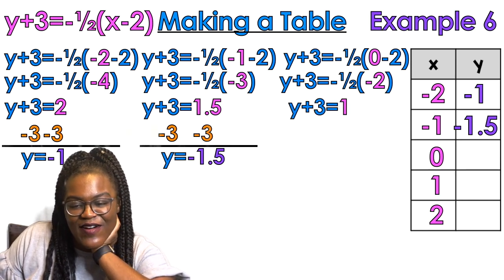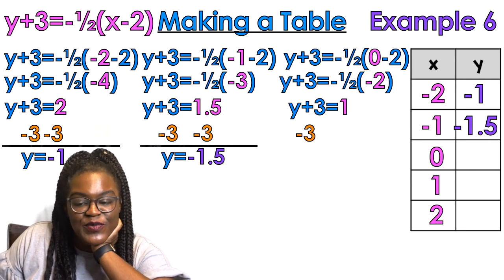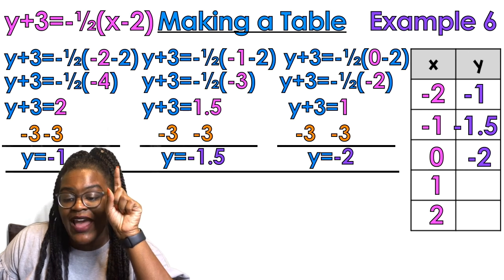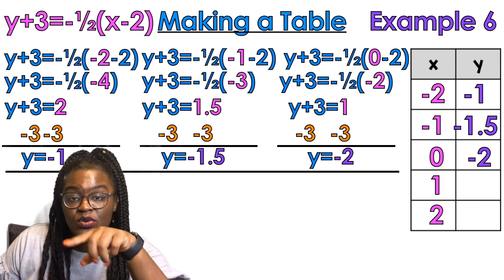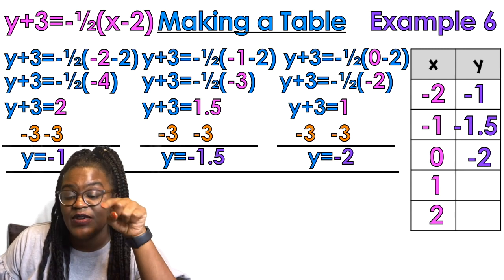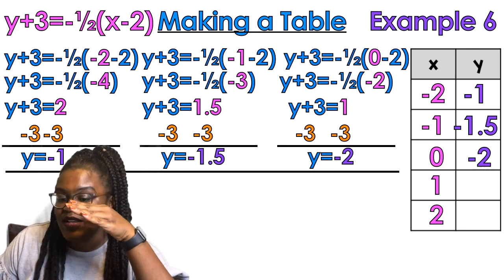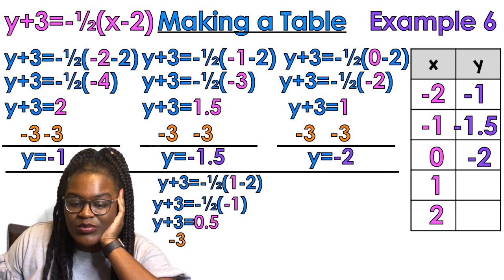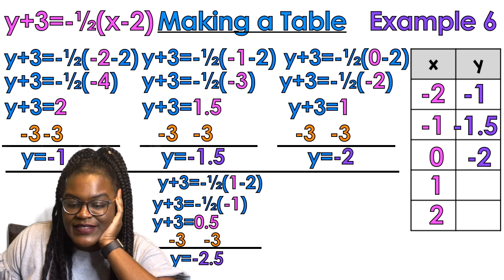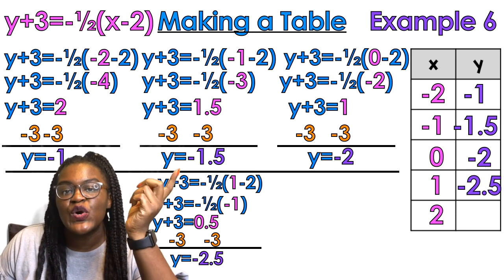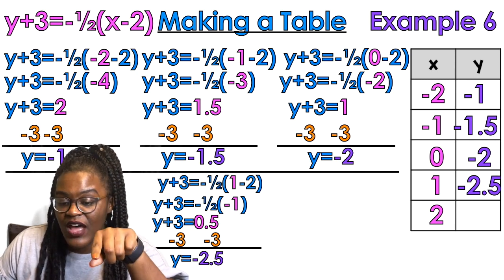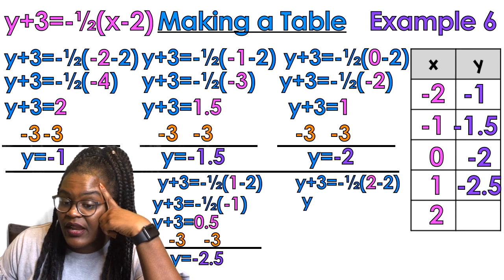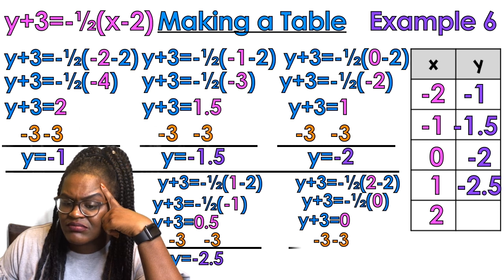Plugging in 0: 0 minus 2 is negative 2 — half of 2 is 1 — and look at my pattern: I'm going from negative 1 to negative 1.5 to negative 2. If it's following the same pattern, the next number has to be negative 2.5 — and yes, it's negative 2.5! Then the last number following the pattern has to be negative 3 — negative 1 to negative 1.5 to negative 2 to negative 2.5, so the last one is negative 3. That's the shortcut — but don't tell your teacher I told you that!